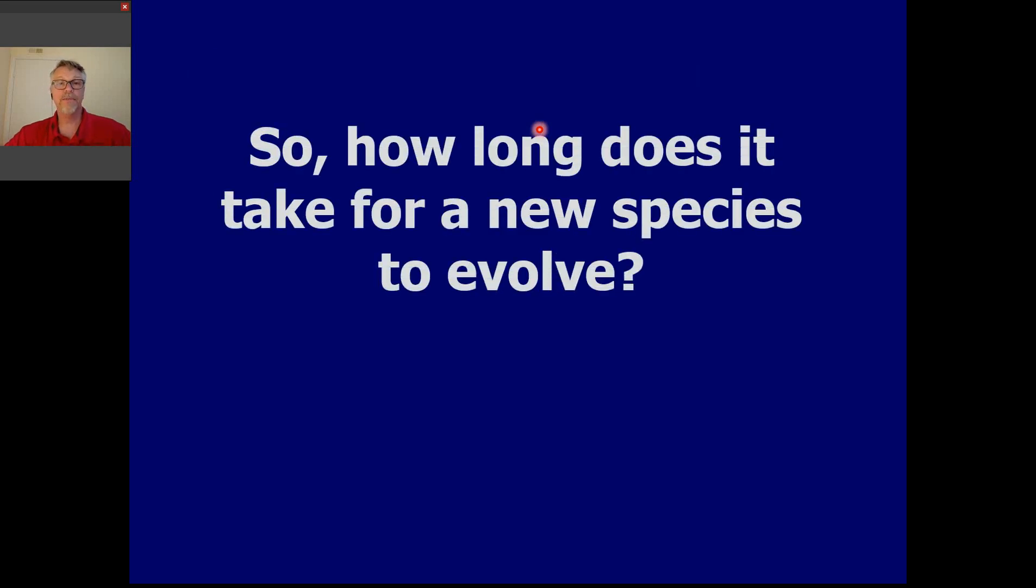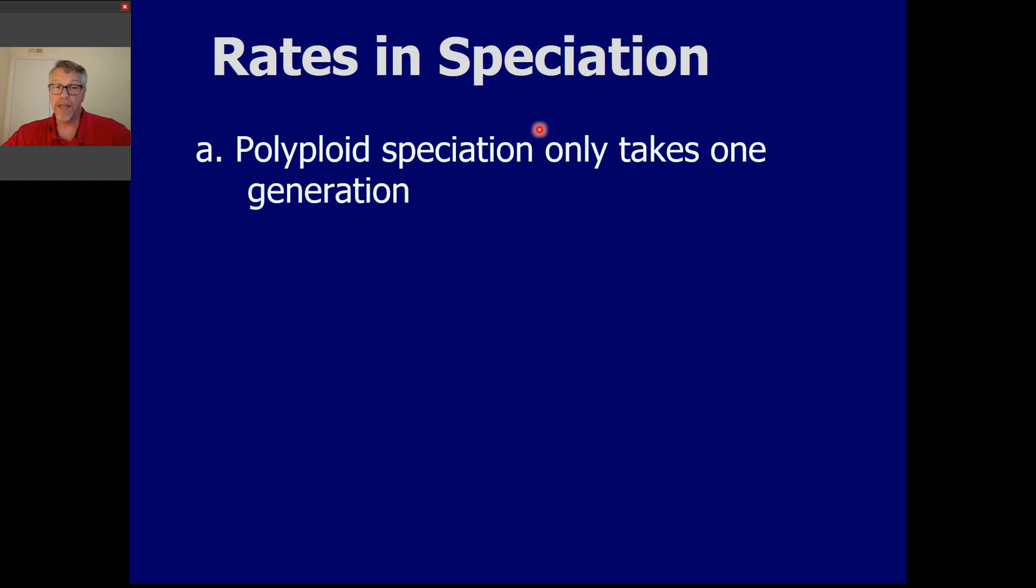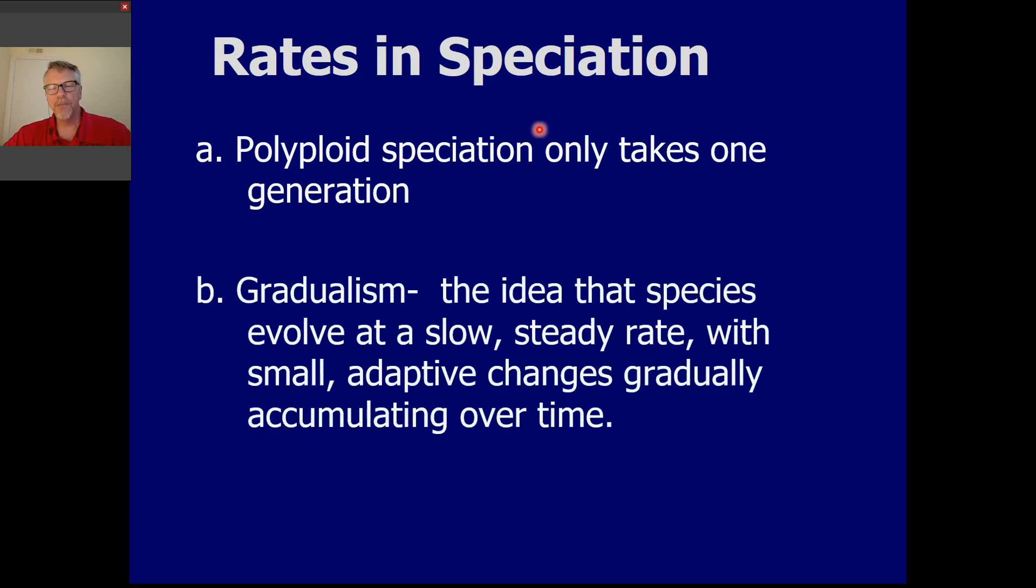Alright, so how long does this kind of thing take? How long does it take to get a new species? Well, in plants, like we just said, it's possible that the speciation can take place in a single generation. Because if it's based on a change in chromosome number, that only takes one generation to happen. And obviously, this only applies to plants, because only plants can endure or tolerate polyploidy, multiple copies of chromosomes. So one description of a possible rate of speciation would be a single generation in a very particular case.